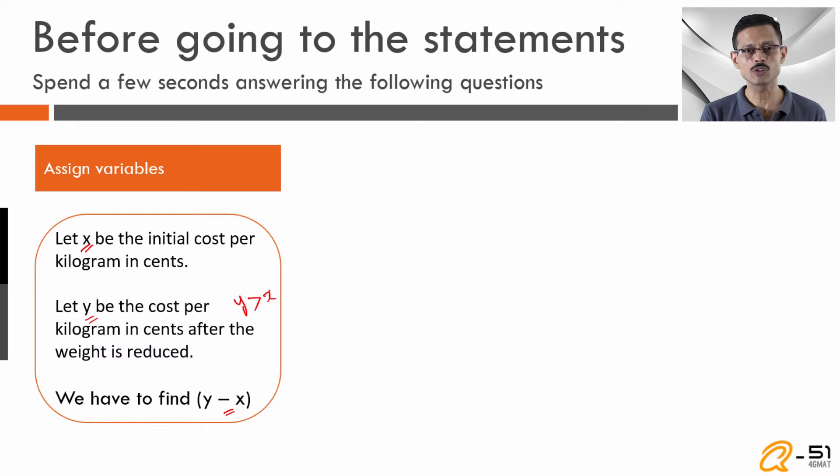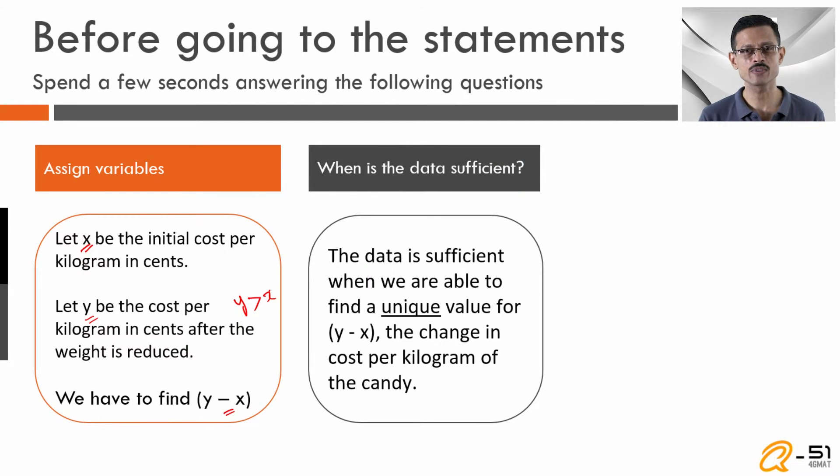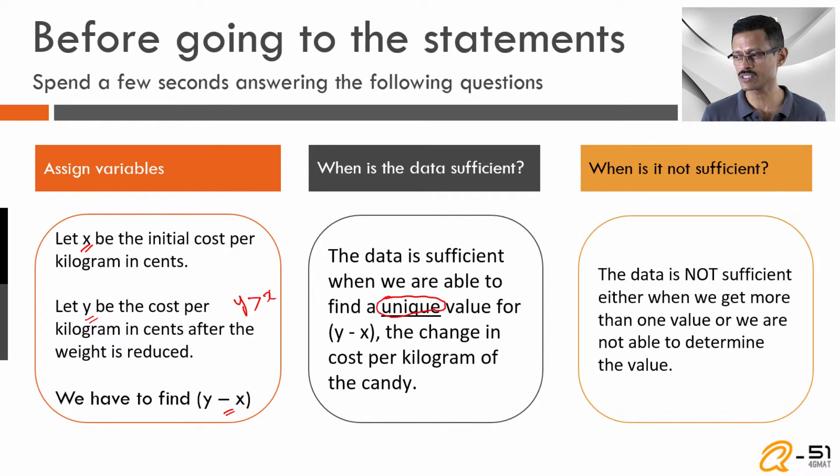When is the data sufficient? In such questions where you're trying to find a value, the data is sufficient when you are able to find a unique value for y minus x. If you can get a unique value, data is sufficient. When is it not sufficient? The data is not sufficient either when we're not able to find out what is y, what is x, or what is y minus x. Or conversely, if you're not able to get a unique value for y minus x, even then the data is not sufficient.